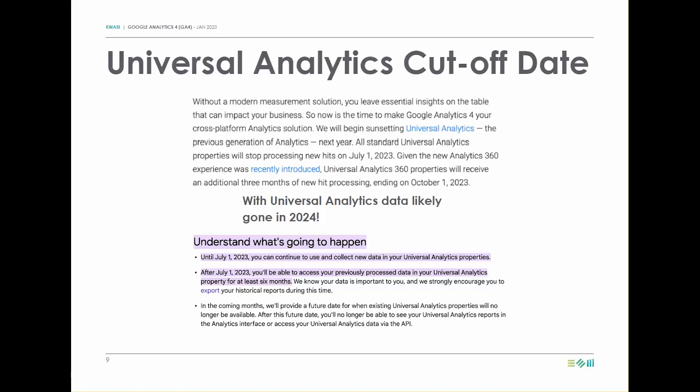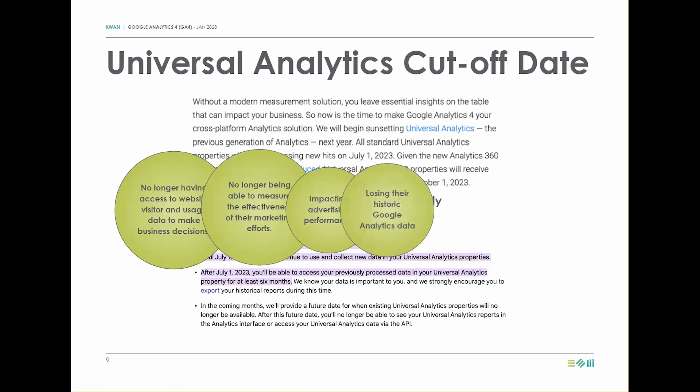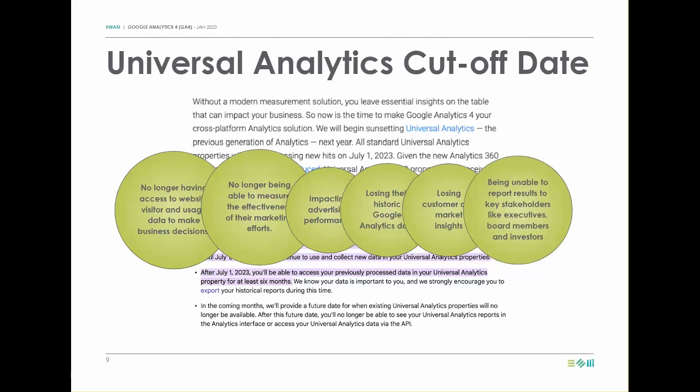As of July 1st, 2023, Google Analytics will stop collecting data. Google has stated that you will have access to your old Universal Analytics for at least six months, which means in 2024 that data may be lost for good. Anyone who hasn't migrated to the new Google Analytics 4 by this date runs the risk of no longer having access to website visitor and usage data to make business decisions, no longer being able to measure the effectiveness of their marketing efforts, it impacting advertising performance, losing the historic Google Analytics data, losing customer and market insights, and being unable to report results to key stakeholders like executives, board members, and investors.